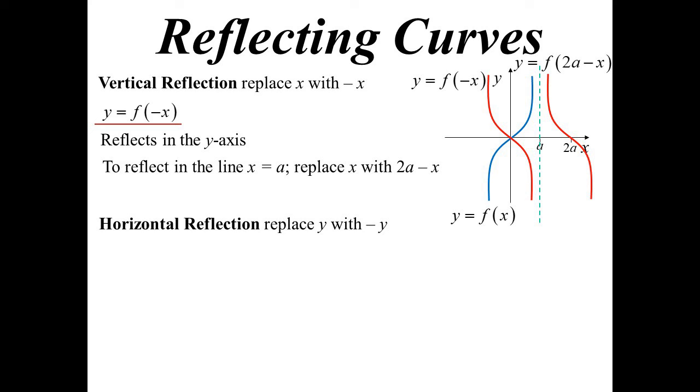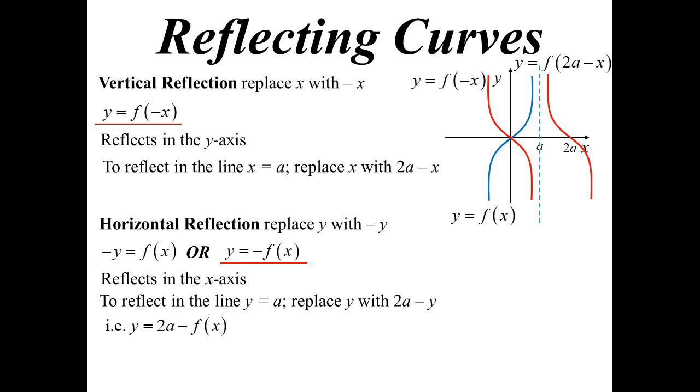Okay, you can do a similar thing horizontally. But now it's the y values that are being flipped. So minus y would equal function x. But we would normally say there's more like that, probably y equals negative function x. That will reflect in the x axis. But again, you don't have to in the x axis. Similar thing. If we have y equals two a minus function x. So we're replacing y with two a minus y.